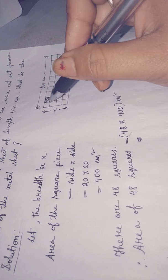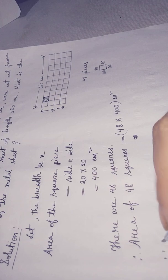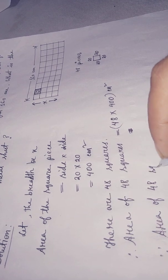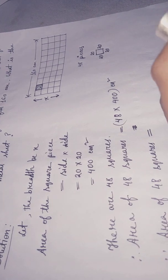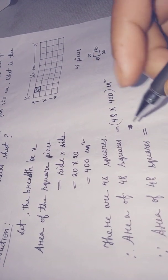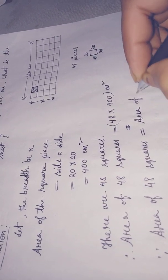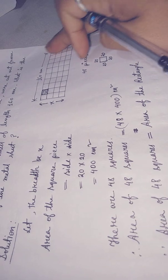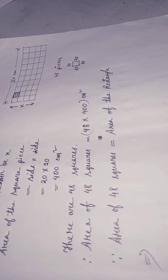Since area of 48 squares equals area of the rectangle, the rectangle area equals area of the rectangle.